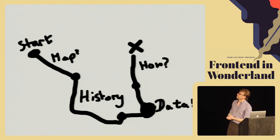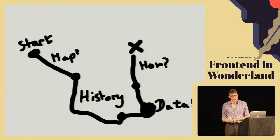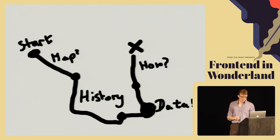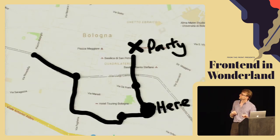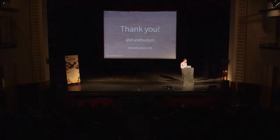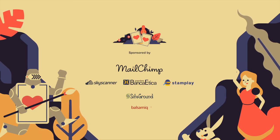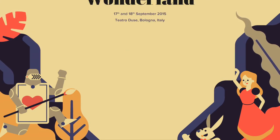So, to draw a map of this talk: we went from the start through talking about maps, through the history and what maps are and why they can be really beautiful. Then we found out that data is really important and we should be using it. And then it's about how we use them. But I think the most important takeaway is context — and that's where the party is later. Thank you.